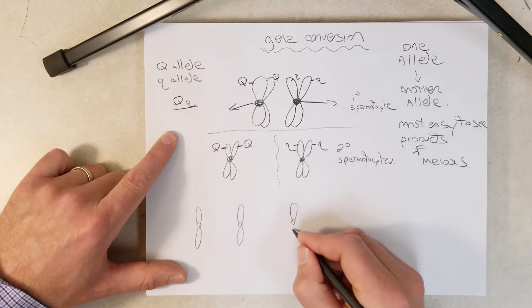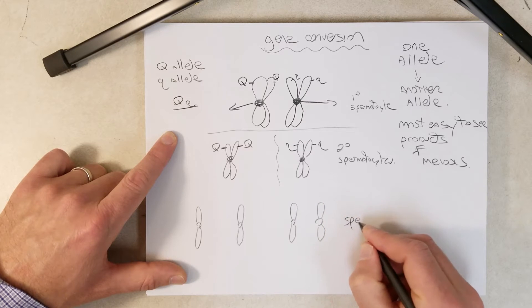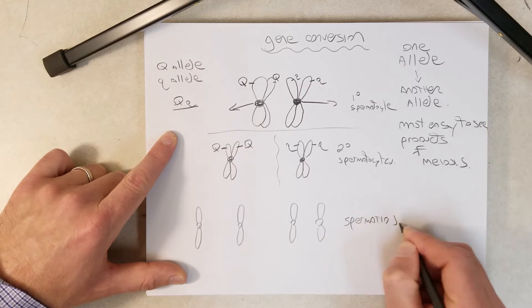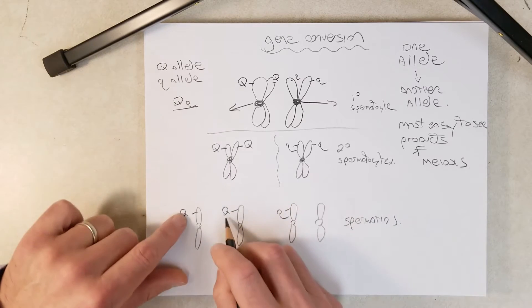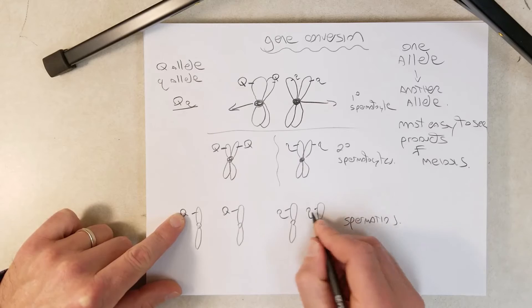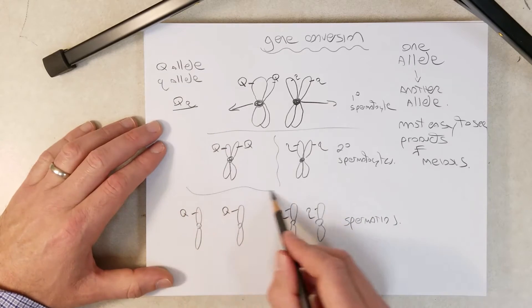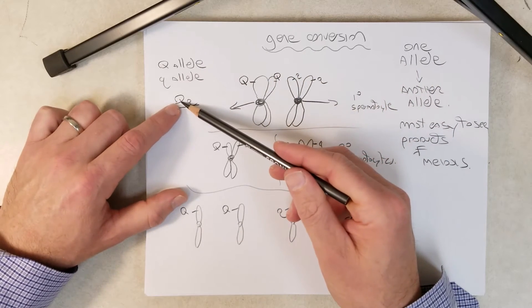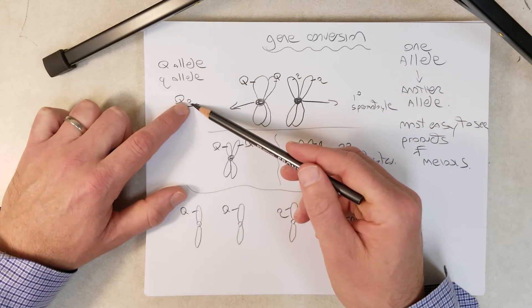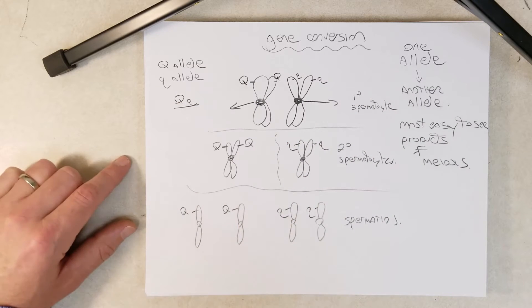And we could even say, let's say this is spermatogenesis. So this is the primary spermatocyte, and then these will be the secondary spermatocytes. And after the next stage of meiosis, the centromeres split, and we get four meiotic products, the spermatids.